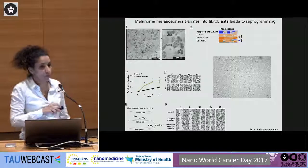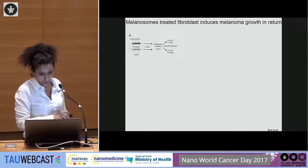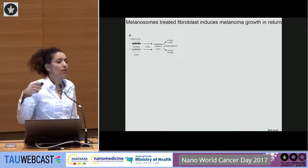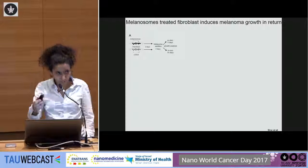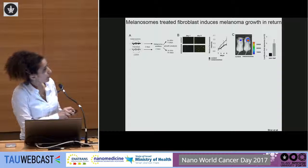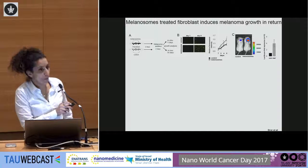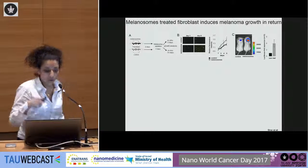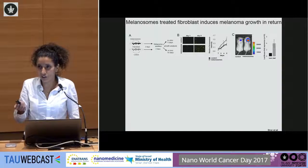When we treated melanoma with a drug to block the secretion of these vesicles, we blocked the effect on the dermis. What do these changes in the dermis mean? The dermal cells — fibroblasts — are growing faster and emigrating. We took these cells treated with melanoma vesicles, mixed them again with melanoma cells, and saw that when you mix melanoma cells with fibroblasts pre-treated with melanoma vesicles, the tumor grows much faster. So these changes in the dermis are enhancing melanoma growth.